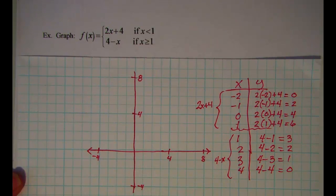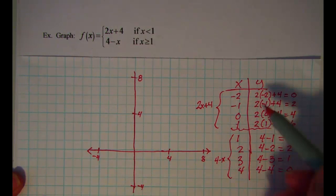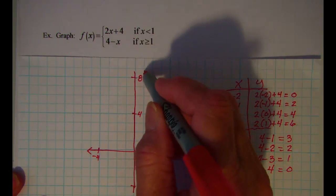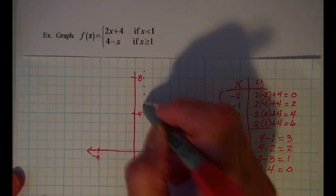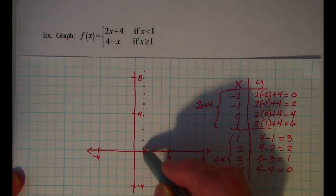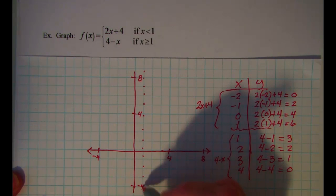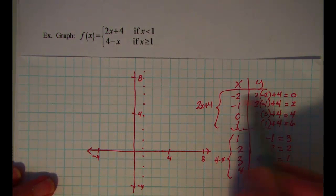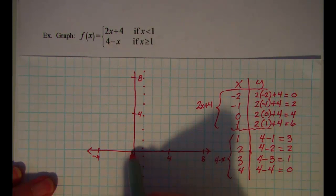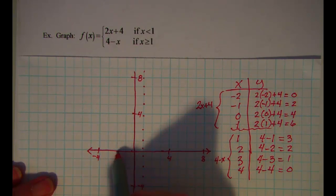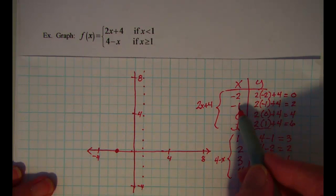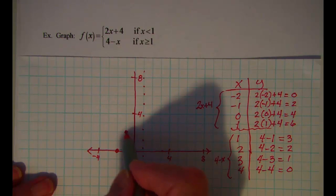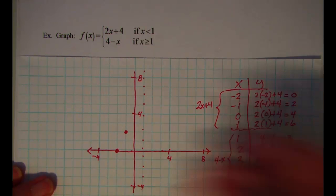Now let's plot these points, keeping in mind that my barrier is x equals 1. So I'm going to put a little dotted line here to remind myself that this is where the barrier is. When x is negative 2, y is 0. When x is negative 1, y is 2. When x is 0, y is 4.